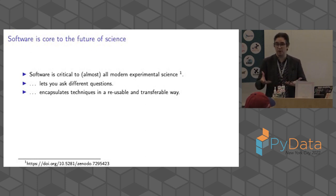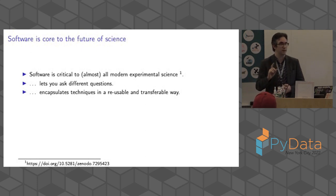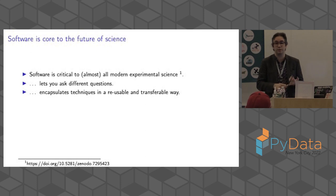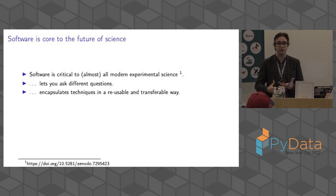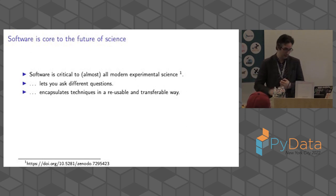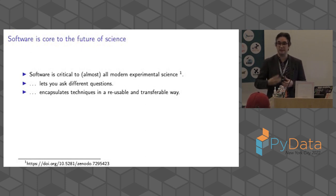Software is critical to the future of science. As we heard in the keynote this morning, about 90% of researchers report they use software and 60% say it's critical. I suspect the 40% who say it's not critical are lying either to themselves or the survey. Software lets you ask different questions — things you just can't do by hand because they're too big or too complex. And software lets you encapsulate techniques and analysis in a way that is natively shareable and reusable by other people.